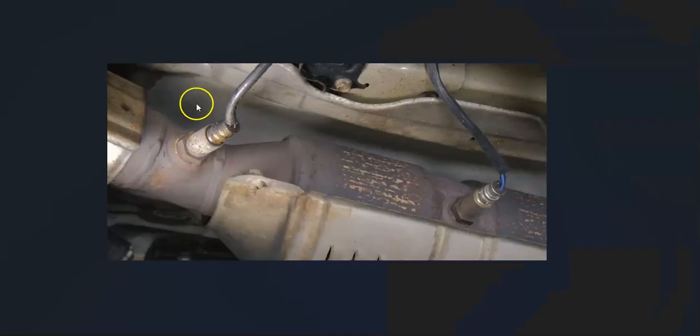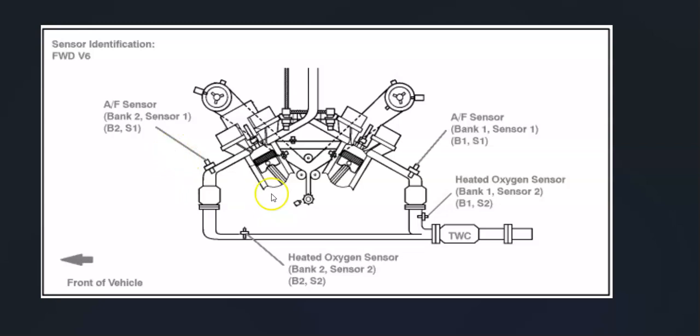Sensor 1 is located before the catalytic converter and is called the upstream oxygen sensor. Sensor 2 is located after the catalytic converter and is called the downstream oxygen sensor. There can be two or four oxygen sensors, sometimes more—it depends on the vehicle, engine type, and year. It's always a good idea to get a diagram of where all the oxygen sensors are located on your particular vehicle. The one you want to locate is bank 1, sensor 2.